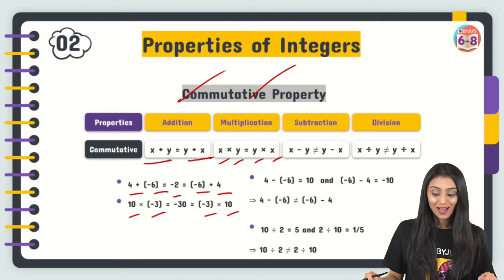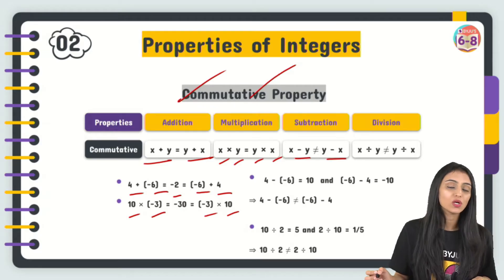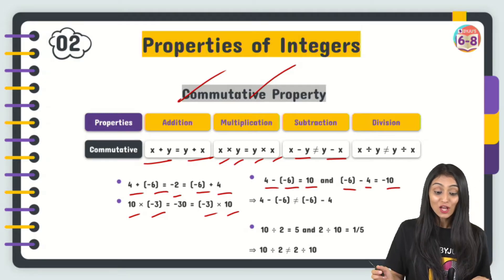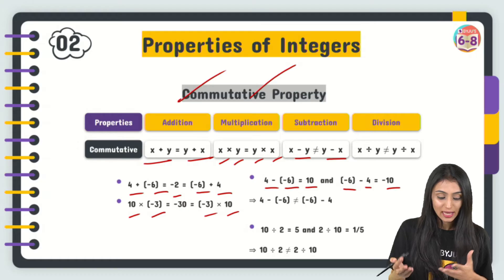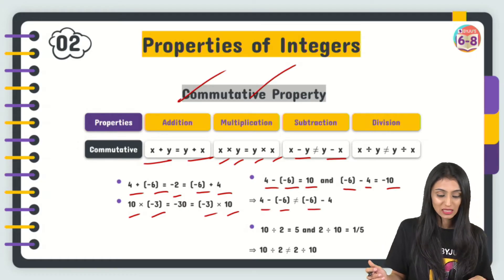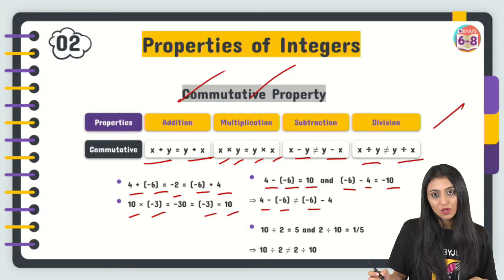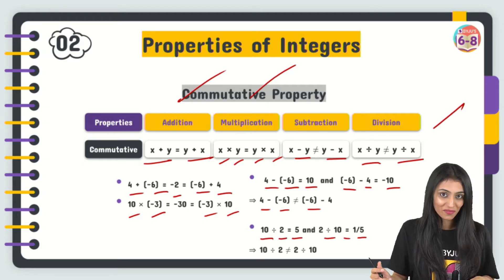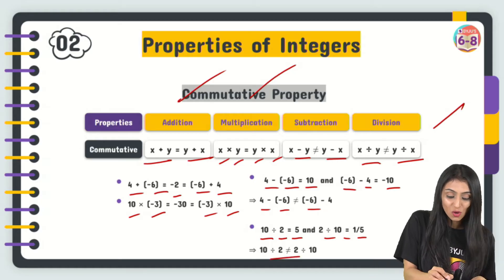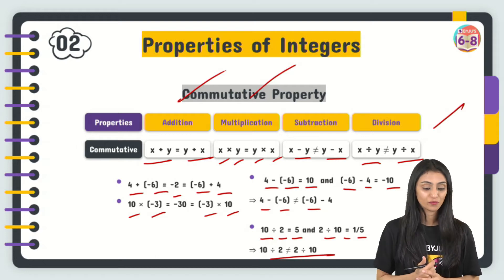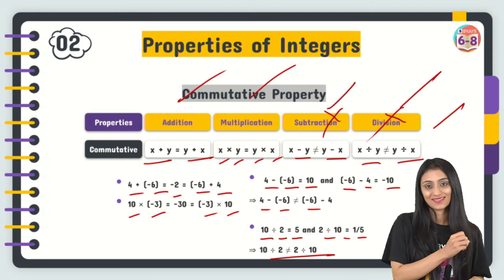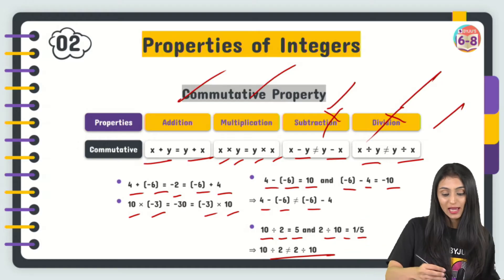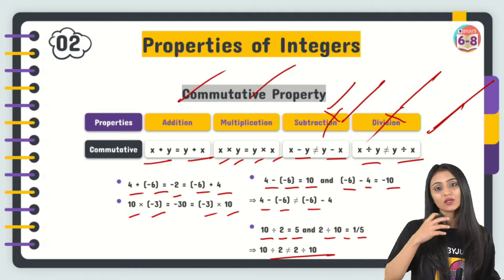However, subtraction and division do not follow the commutative property. For subtraction: x − y ≠ y − x. Example: 4 − (−6) = 10 but (−6) − 4 = −10. For division: x ÷ y ≠ y ÷ x. Example: 10 ÷ 2 = 5 but 2 ÷ 10 = 1/5. The result changes when the order is swapped, so subtraction and division are not commutative — this holds whether we're talking about integers or whole numbers.